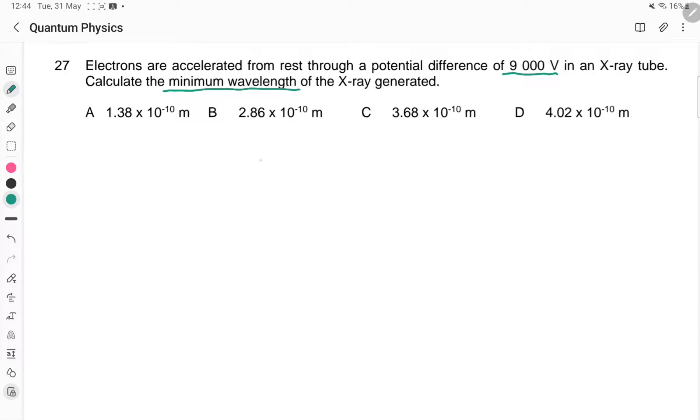So what's going on is this 9,000 volt is to tell us what is the KE of the electron. The KE is 9,000 eV.